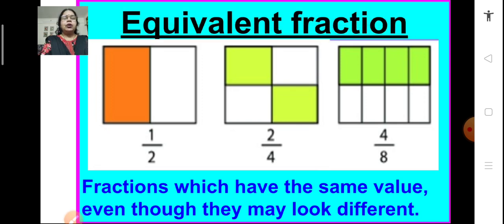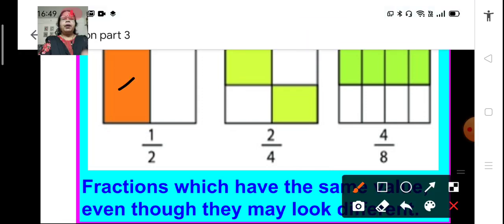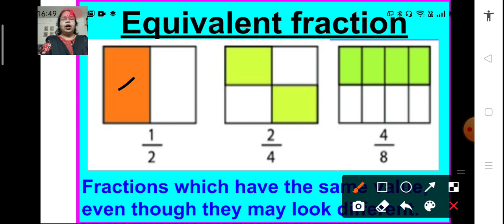Now coming to the next topic: what are equivalent fractions? Children, look at these pictures carefully. In the first figure, half of the figure is divided into two equal parts and only one part is shaded, which represents 1 out of 2 or 1 upon 2. In the second one, the whole is divided into 4 and two parts are shaded, so the fraction is 2 upon 4. In the third one, the figure is divided into 8 equal parts and 4 are shaded, so the fraction is 4 upon 8. Children, the fractions 1 upon 2, 2 upon 4 and 4 upon 8 may look different, but they are equal fractions — they represent the same part of the whole.